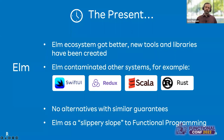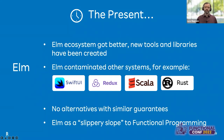Regarding what happened to the language in those last three years: the Elm ecosystem got better and larger with new tools and libraries. Elm also inspired other systems to a different extent — for example, Swift UI, Redux, Scala, and Rust. At the moment, there are still no valid alternatives to Elm with similar guarantees. There are some alternatives like PureScript or ReScript with different sets of guarantees, and as Richard Feldman nicely put it this morning, with different ergonomics.